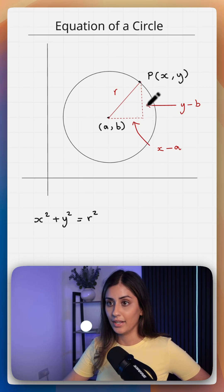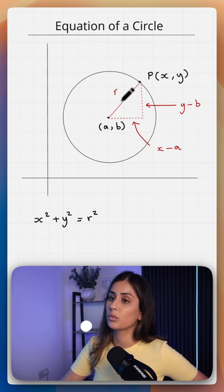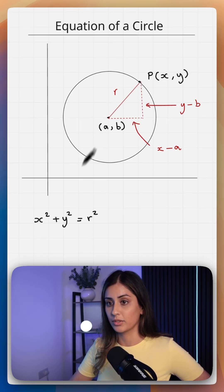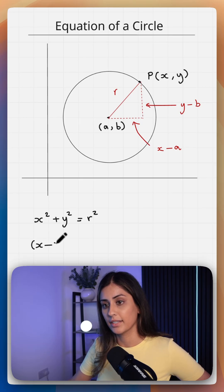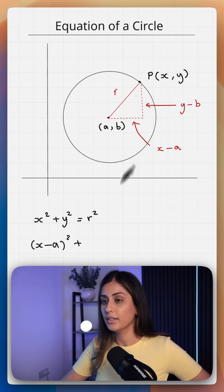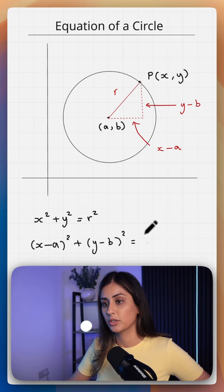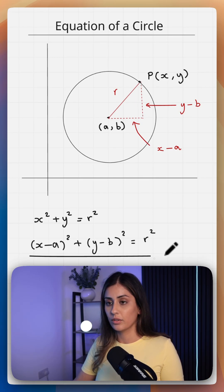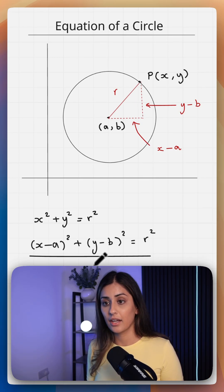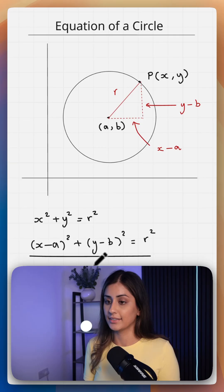What that means is your sum of squares of your shorter sides is equal to the square of your hypotenuse. So x minus a squared plus y minus b squared is equal to our hypotenuse, our radius squared. This is how you derive the equation of a circle when your center is a, b.